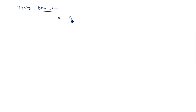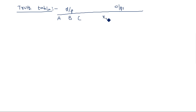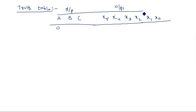Now let's draw the truth table. The inputs are the 3-bit variables A, B, C, and the outputs are the 6-bit variables X5, X4, X3, X2, X1, X0. The input combinations run from 000 through 111.